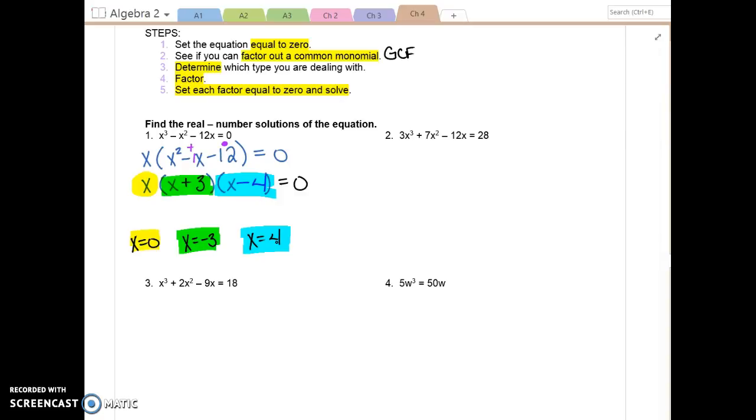Take a look at number 2. The first problem is it's not equal to zero. So our first step is to subtract 28 on both sides so that we have equal zero on the right side. See if you can factor out a common monomial. Do those four terms have anything in common? No.